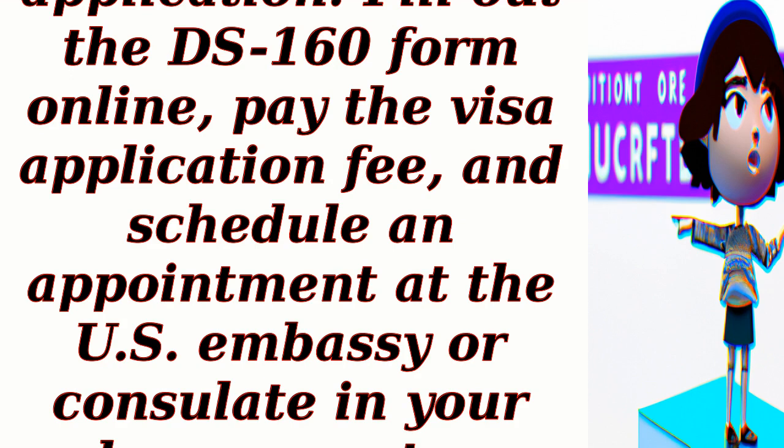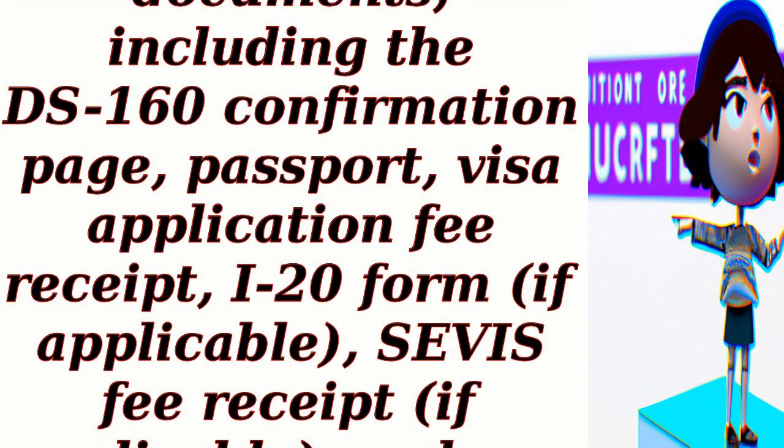Step 6: Complete the visa application. Fill out the DS-160 form online, pay the visa application fee, and schedule an appointment at the U.S. Embassy or consulate in your home country. Step 7: Attend the visa interview. Prepare for the visa interview by gathering all necessary documents, including the DS-160 confirmation page, passport, visa application fee receipt, I-20 form (if applicable), SEVIS fee receipt (if applicable), and any additional documents requested by the embassy or consulate.